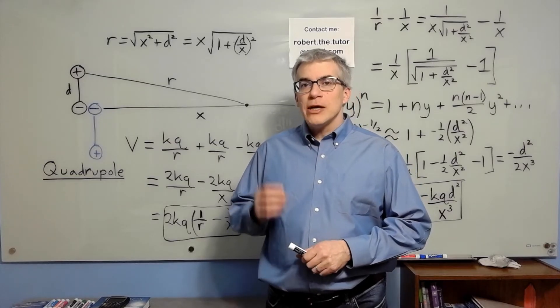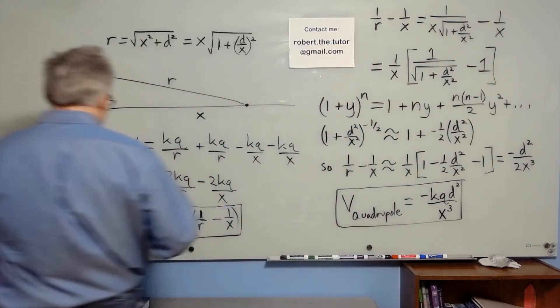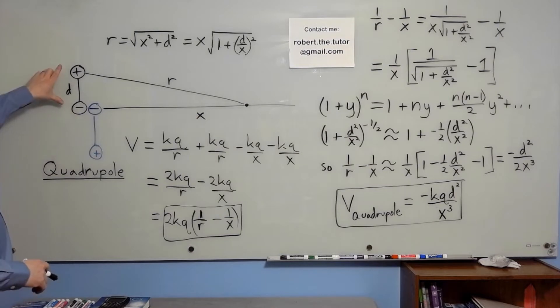Let's find the voltage of a quadrupole. A quadrupole can be formed in different ways. One way is to have a dipole and a dipole oriented in opposite directions, essentially with their negatives touching.